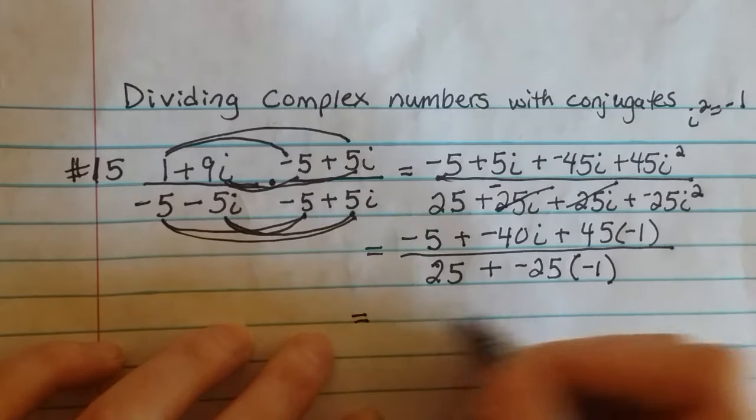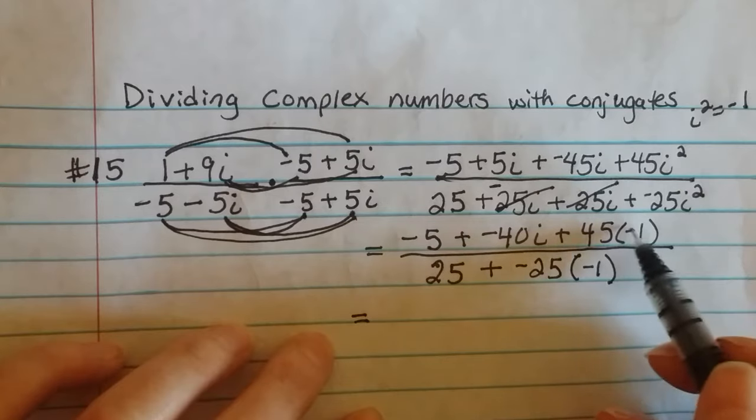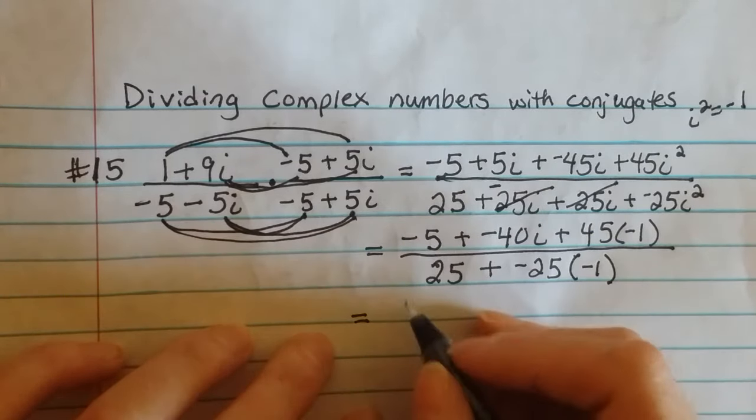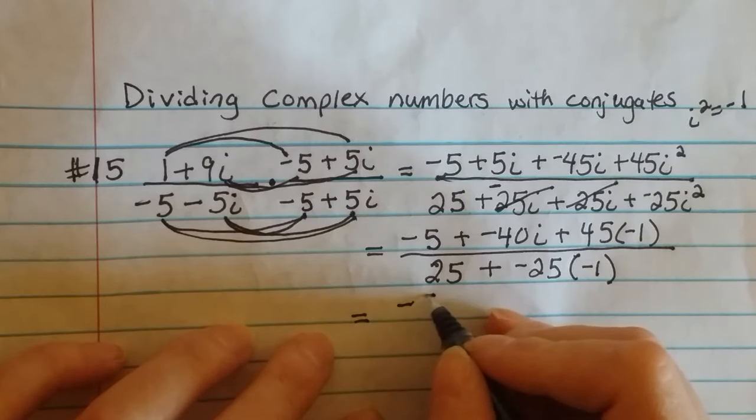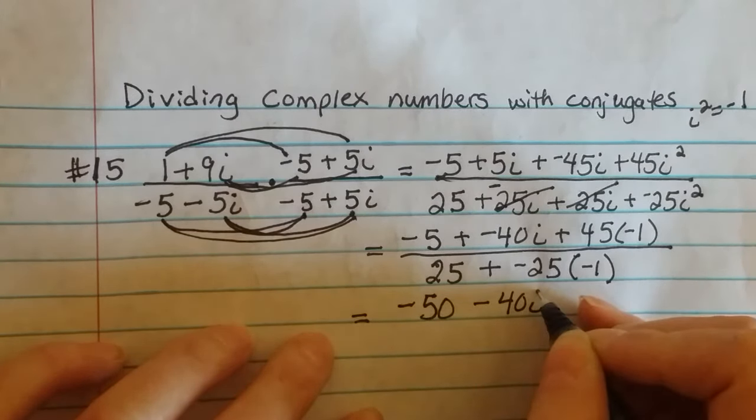So then I need to go ahead and simplify again. So this is going to be a -45. So a -45 plus a -5 would be a -50 minus 40i on the top.